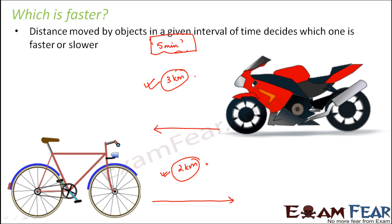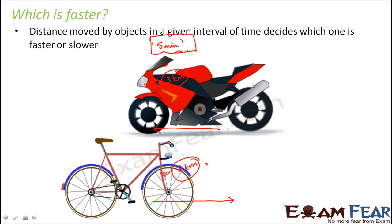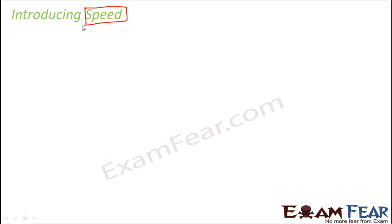Fast or slow is defined by the rate of change of position with time — how fast the position is changing with time. When we talk about motion, we talk about the change in position with time. But when we talk about the fast or slow speed of a vehicle, we are talking about the rate at which the position changes with time. That is how we can say the bike is faster and the bicycle is slower. This is where we introduce the term speed.